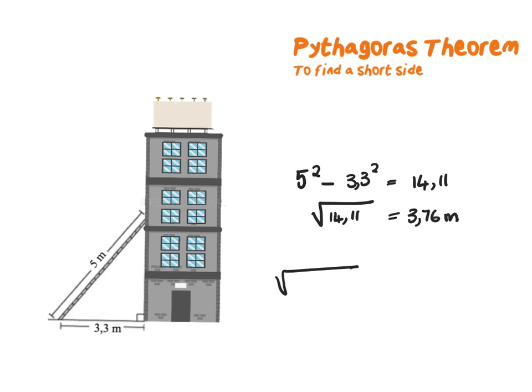Once again the short method here would be to say 5 squared minus 3.3 squared and you will get 3.76 just by doing one step.